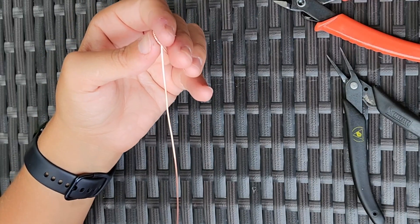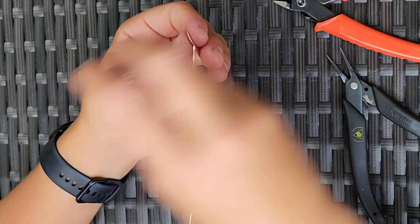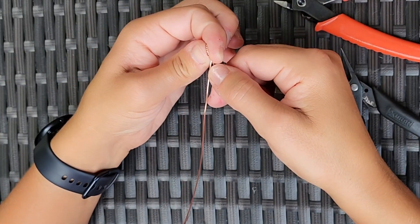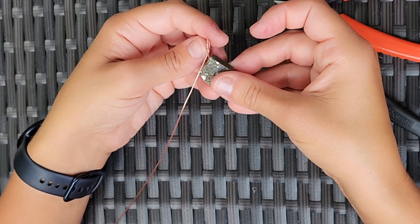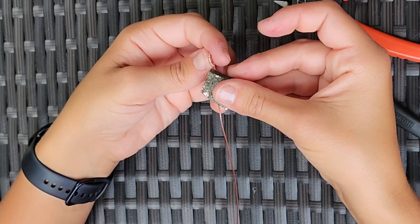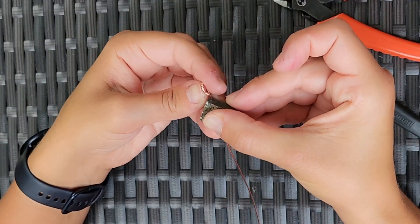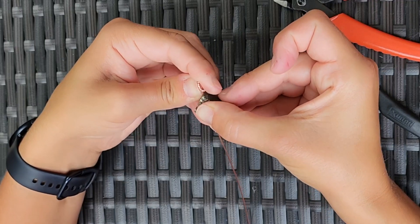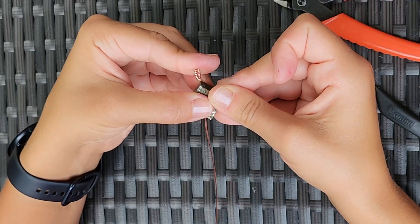The bail is done and it's time to grab our stone. We're going to center our stone under the bail right where we want it. This part just takes a little bit of patience to get it right where we want it and centered correctly.